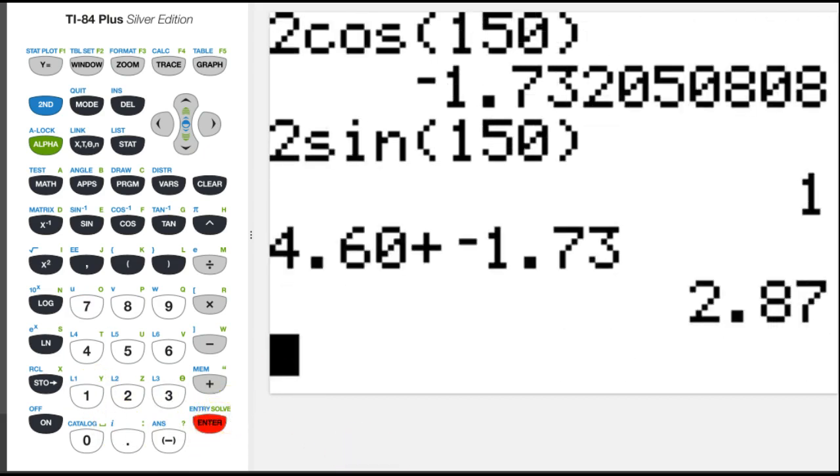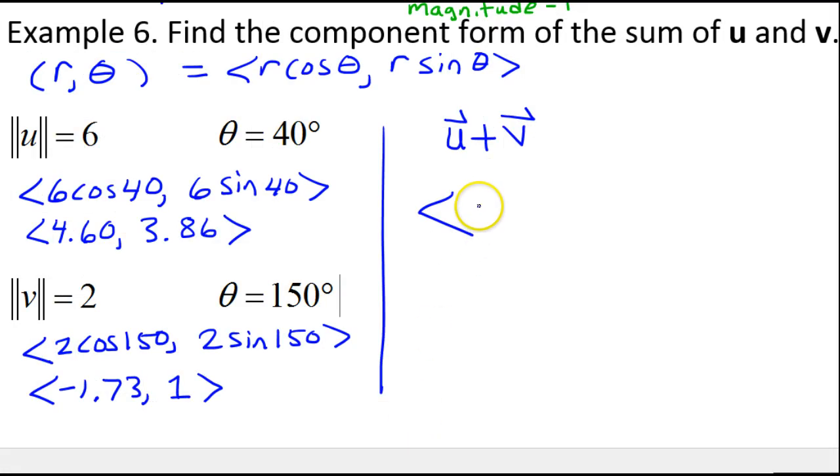That's 2.87. And then, how about 3.86 + 1? That's going to be 4.86.